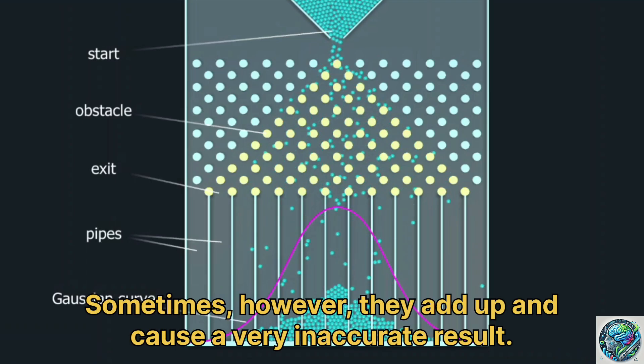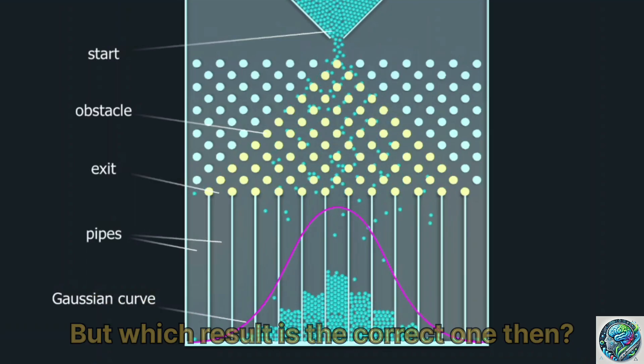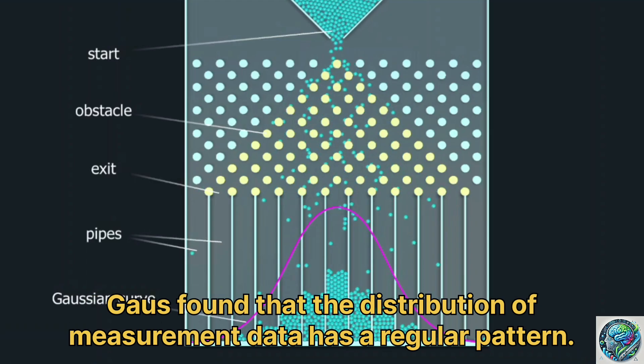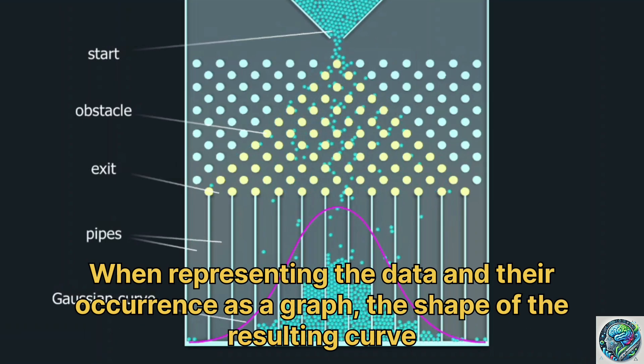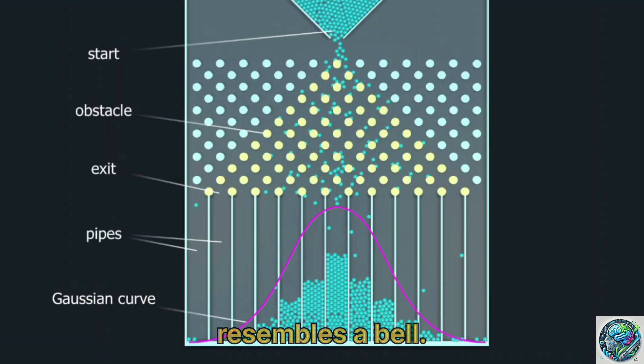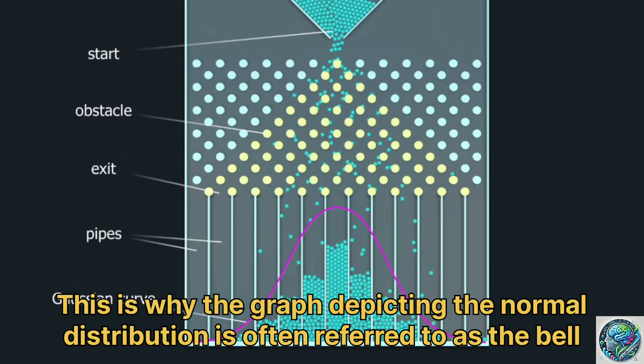Sometimes, however, they add up and cause a very inaccurate result. But which result is the correct one, then? Gauss found that the distribution of measurement data has a regular pattern. When representing the data and their occurrence as a graph, the shape of the resulting curve resembles a bell. This is why the graph depicting the normal distribution is often referred to as the bell curve.